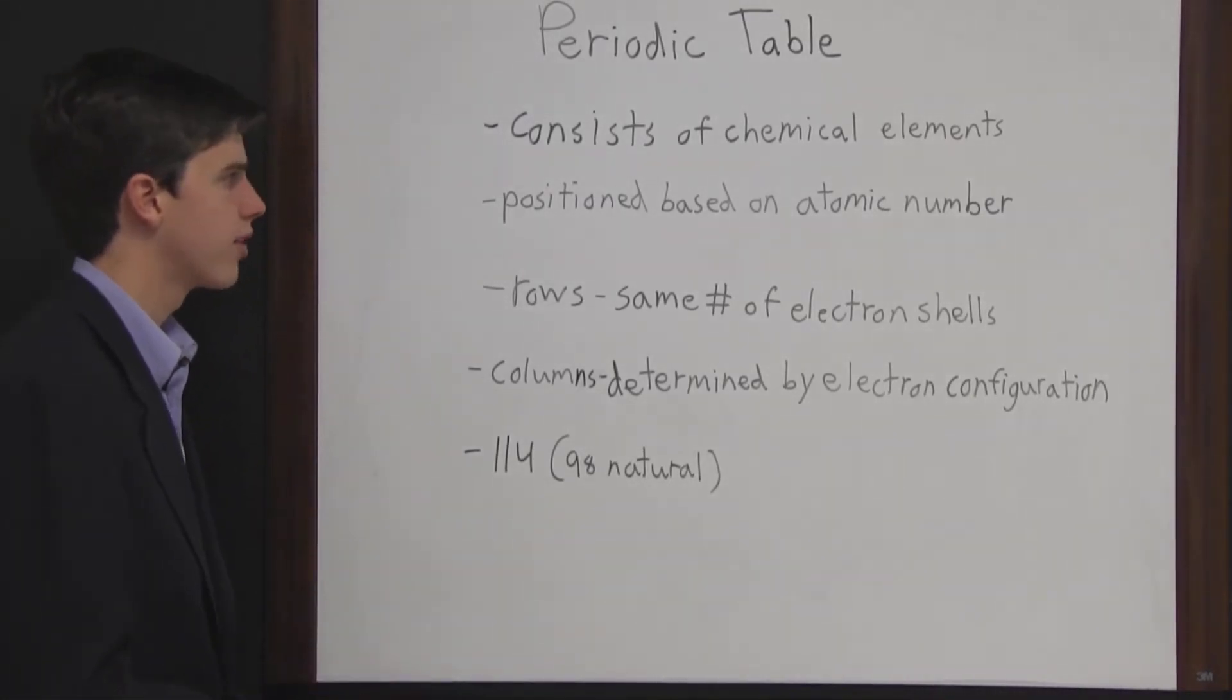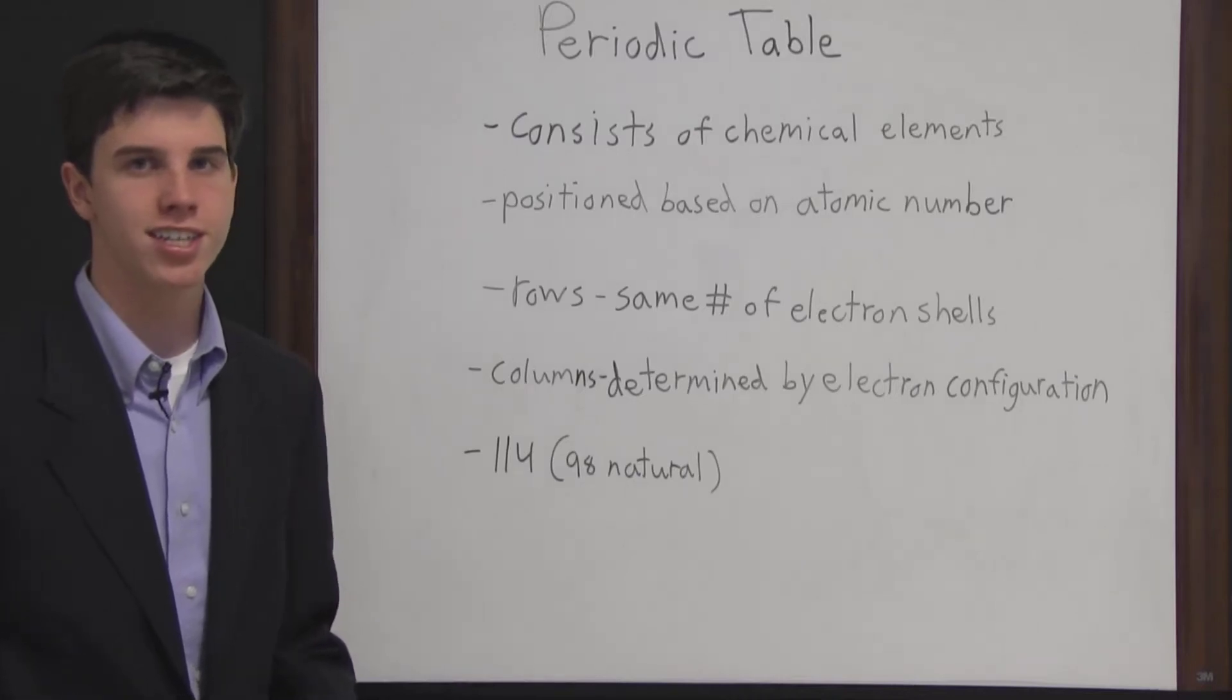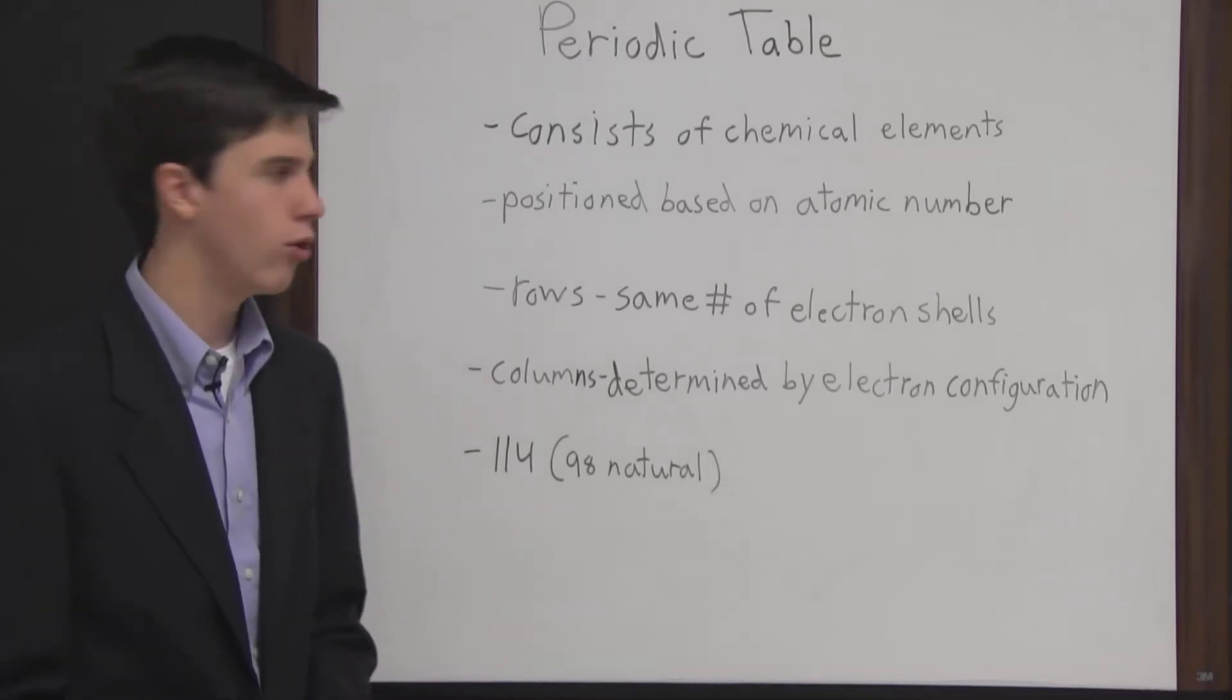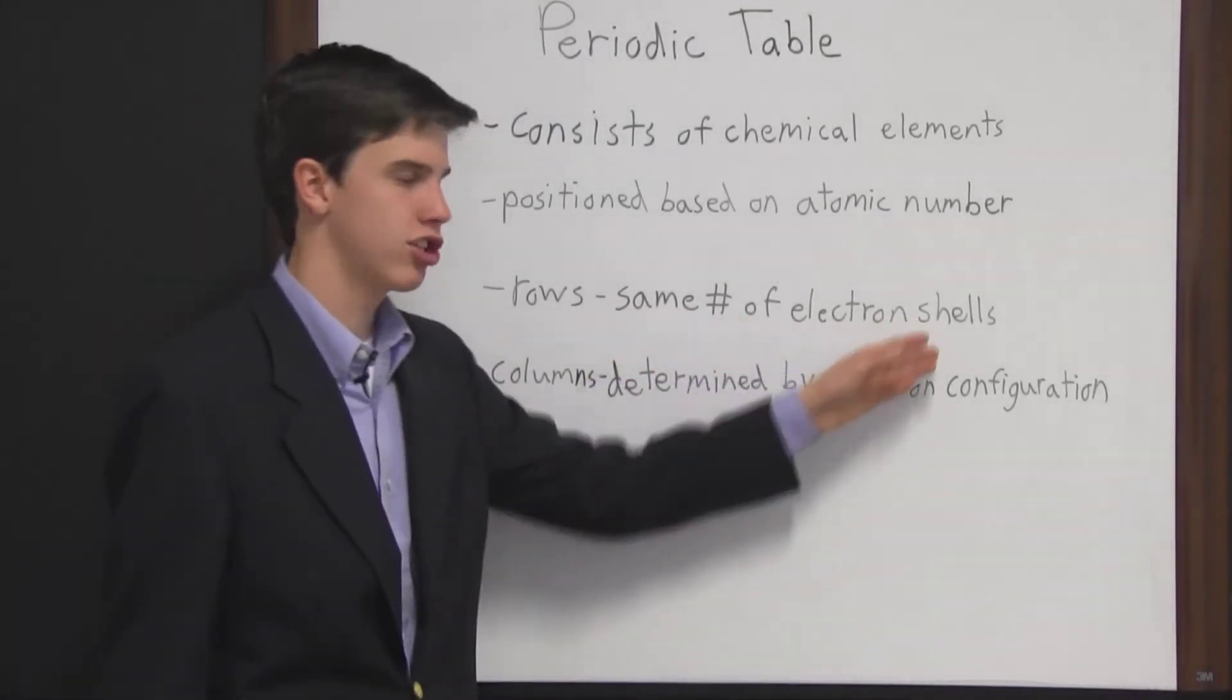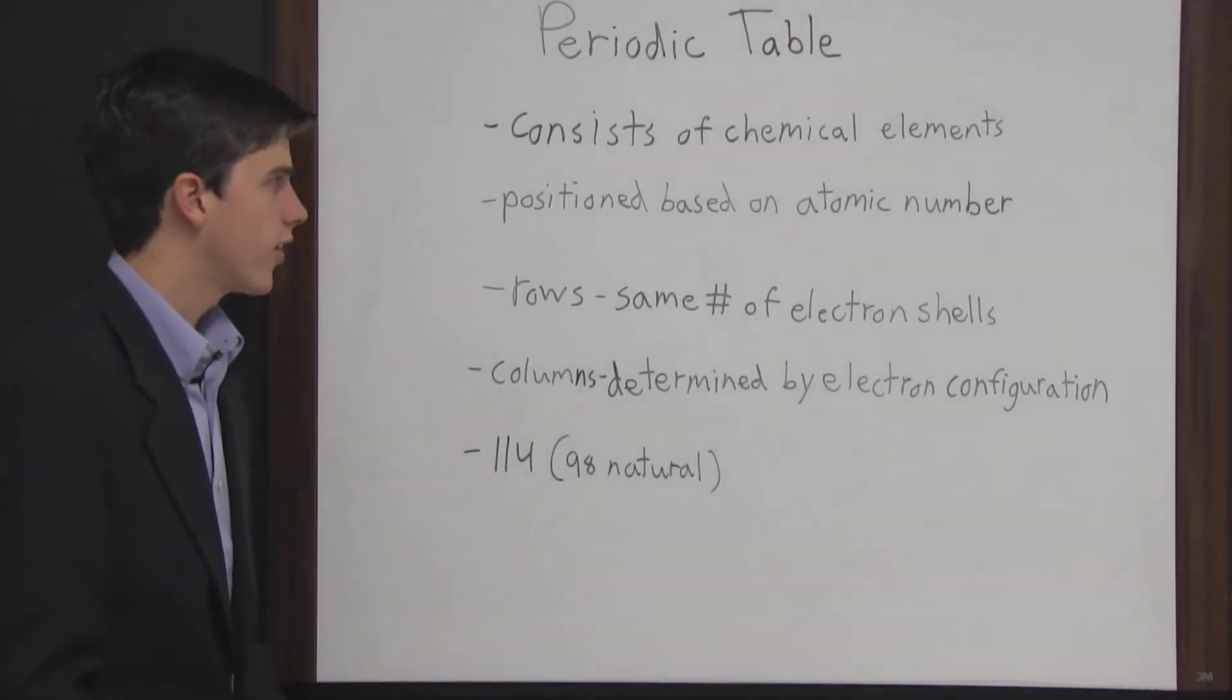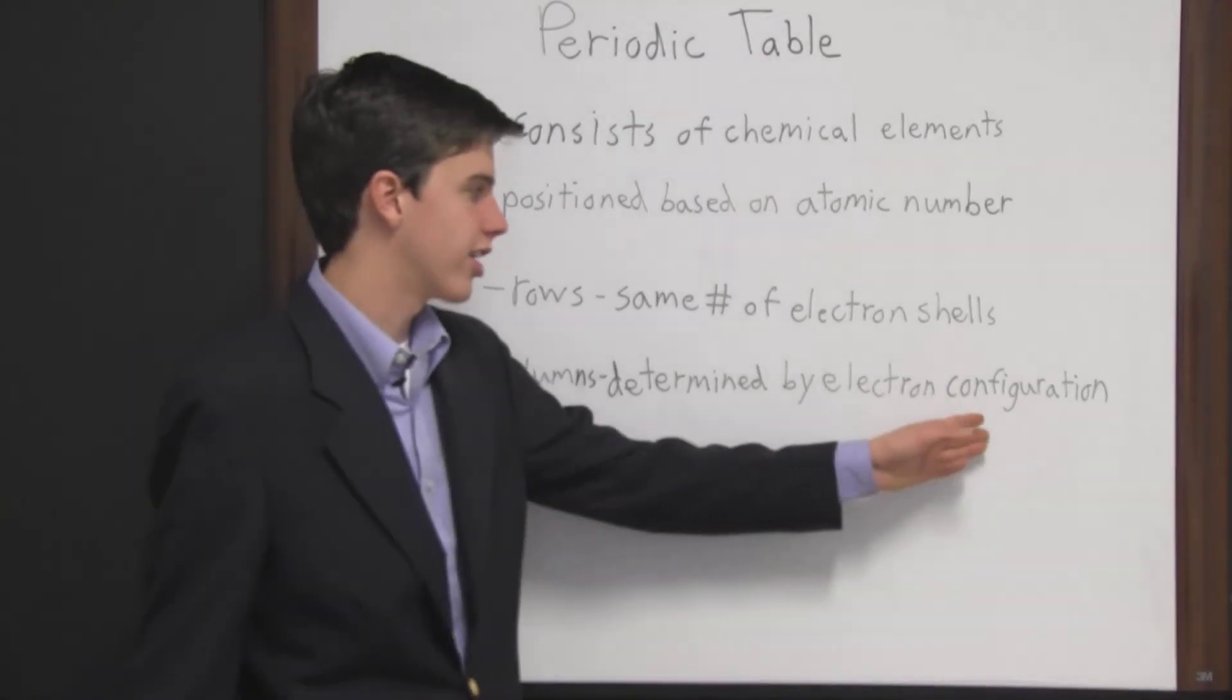The periodic table arranges chemical elements very systematically. So if you were to take a look at one row on the periodic table, all the chemical elements on that one row would have the same number of electron shells. And if you were to take a look at one column, all the chemical elements in that column would have the same electron configuration.